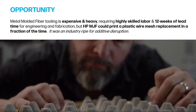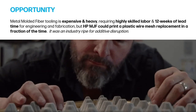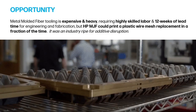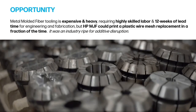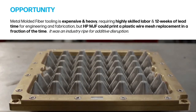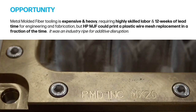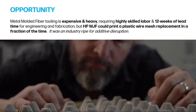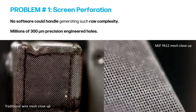Here's the opportunity we had: metal molded fiber tooling is expensive, heavy — you might need a crane or multiple people to move it around — highly skilled labor, 12 weeks of lead time. But we knew from printing some small coupons that we could make something 3D printed that was robust enough and had some potential. So we could replace that wire mesh and serve the industry in a fraction of the time with more control at a local level.